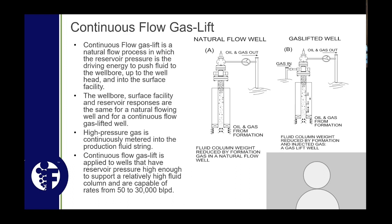You're essentially supplementing the gas that the formation either doesn't have capability for, has given up, or hasn't achieved the drawdown to start getting increases in GLR. We achieve that through two things: high-pressure gas typically provided by a compressor, and introduction of that gas through the gas valve as a pressure regulator. Production rates can vary widely — you might produce a Barnett Shale gas lift system at 100 barrels per day or less on a depleted well.